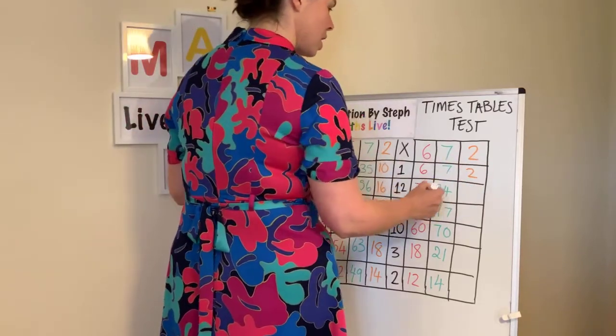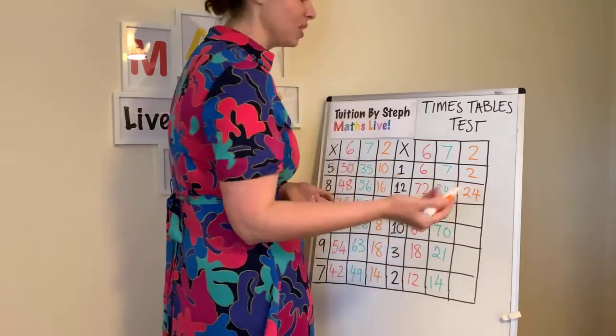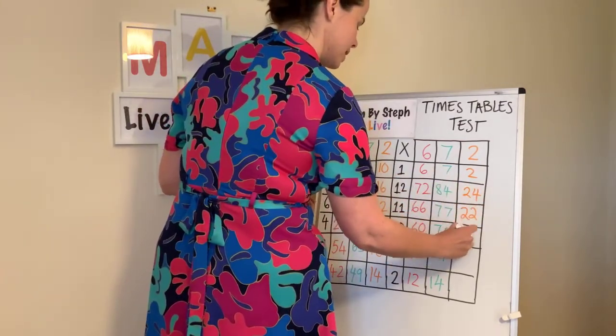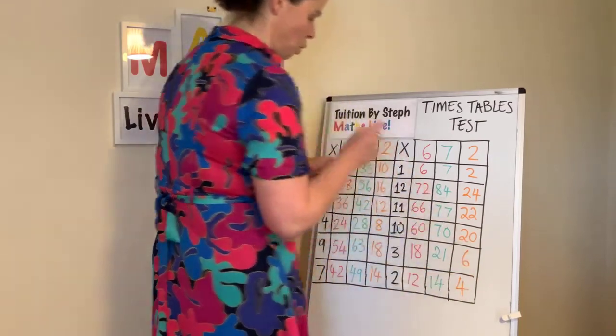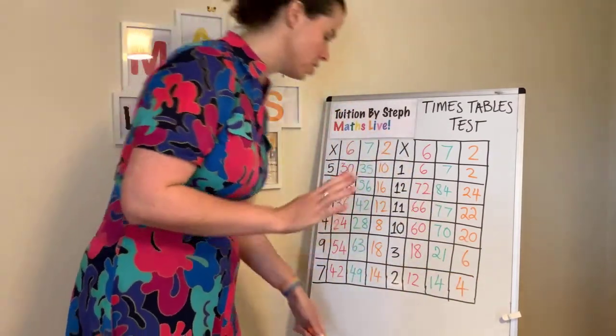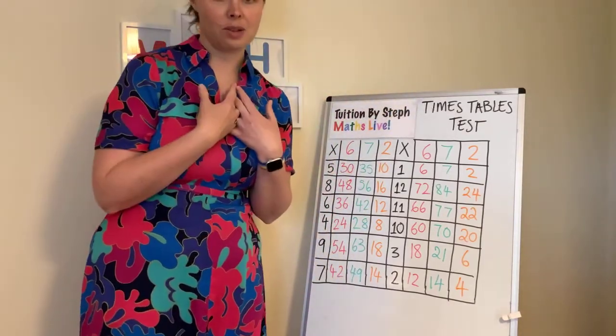So, one two is two. Twelve twos, 24. Two twelves, 24. Eleven twos, 22. Ten twos, 20. Three twos, six. And two twos are four. So, well done if you got them all right. Don't worry if you made a little mistake, as I said. It's all good practice. You know that I make mistakes.